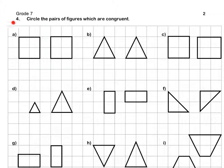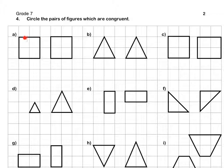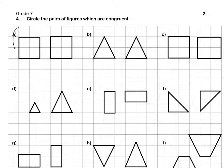Question 4: Circle the pairs of figures which are congruent. For A, the first square and the second square are the exact same size. Therefore, they are congruent.